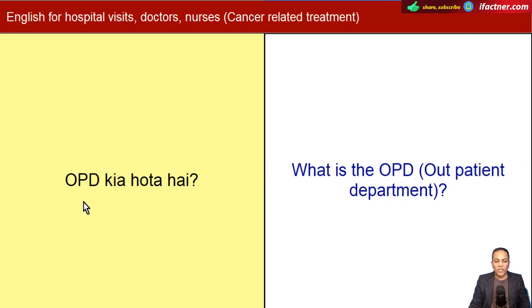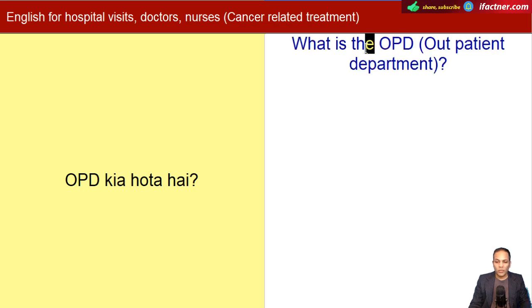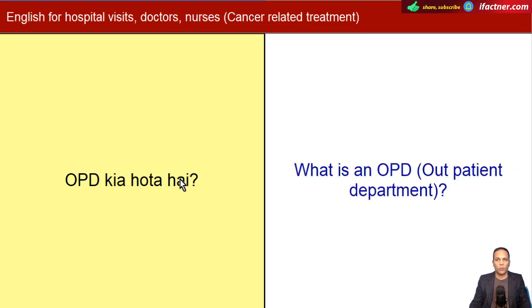OPD kya hota hai? What is the OPD? OPD hota hai basically outpatient department. Jo pehli dafah patient kisi bhi hospital jaata hai, toh outpatient department mein jaata hai. What is an OPD - outpatient department?